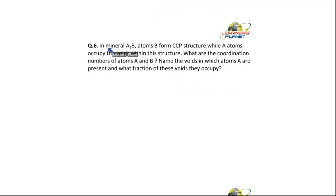Yeah, this is in mineral A₂B, atoms B form CCP structure while A atoms occupy voids within this structure. What are the coordination numbers of atoms A and B? Name the voids in which atoms A are present. What fraction of these voids are occupied?